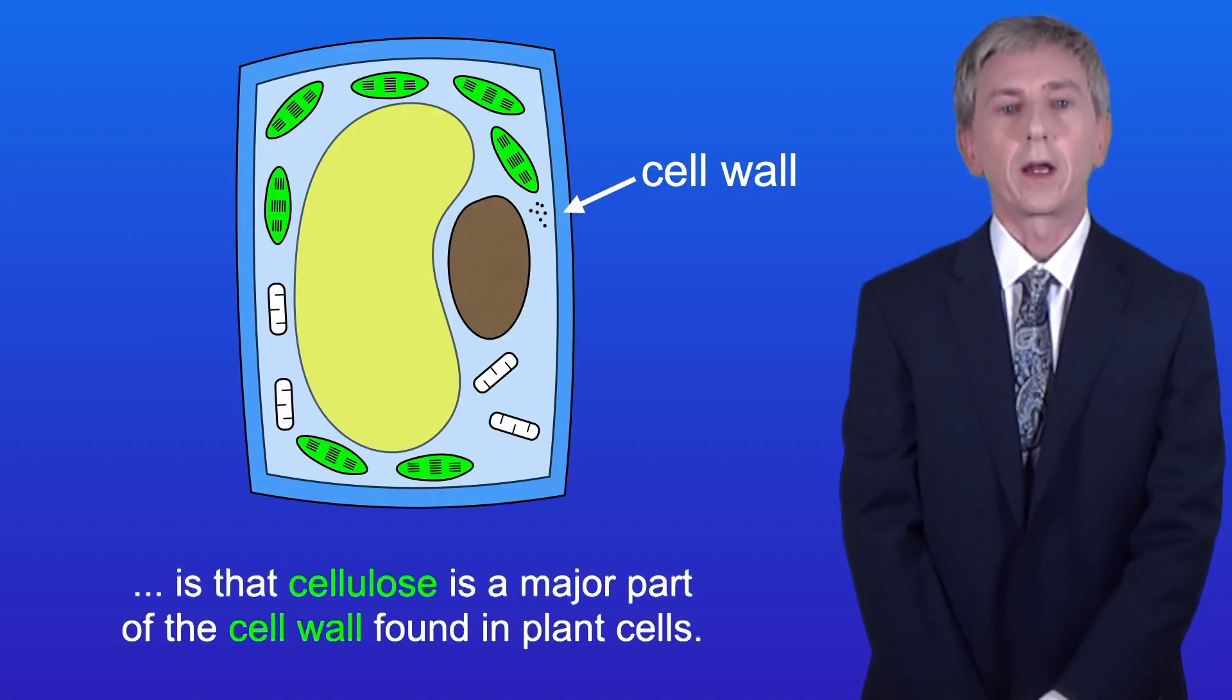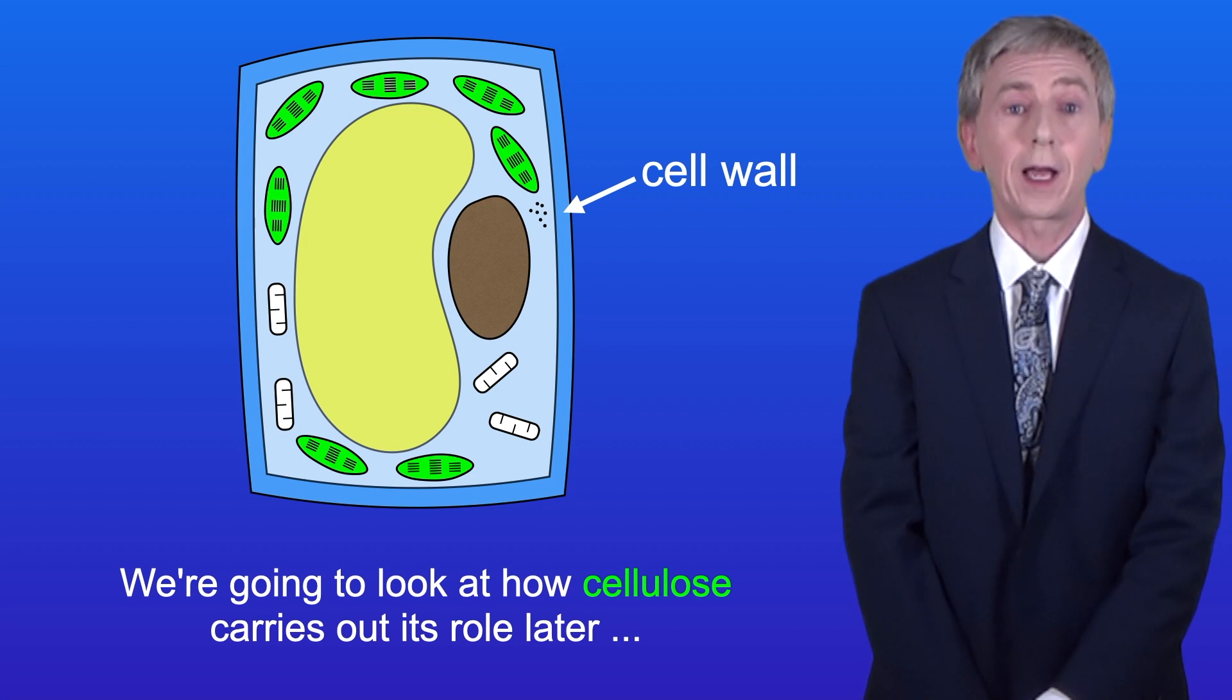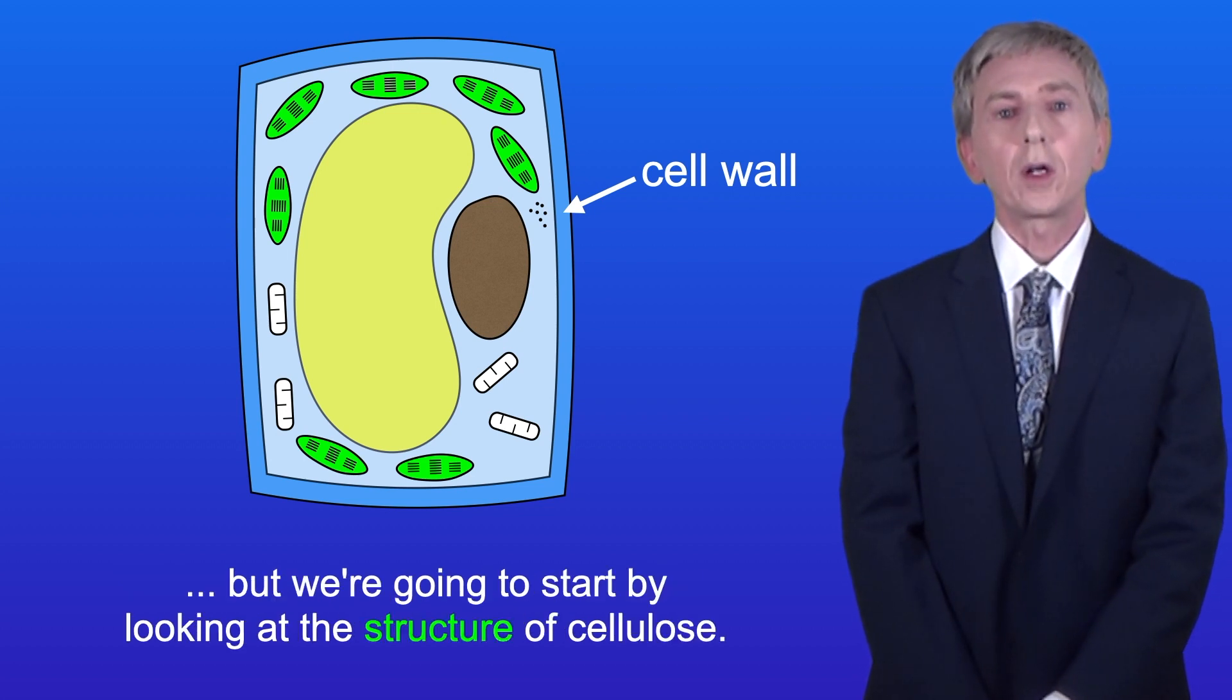Now the first key idea you need to understand is that cellulose is a major part of the cell wall found in plant cells. We're going to look at how cellulose carries out its role later, but we're going to start by looking at the structure of cellulose.